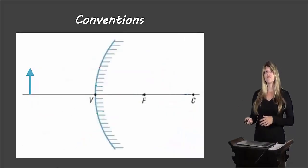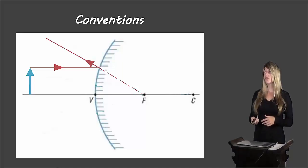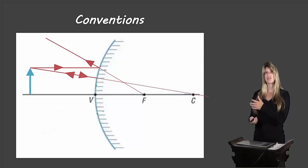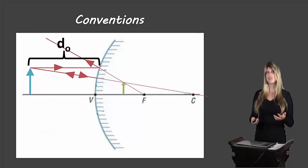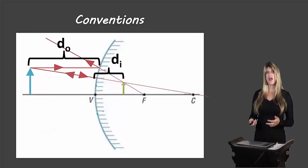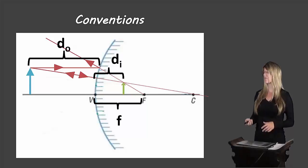Now let's see how these look in a convex mirror. A light ray parallel to the principal axis will reflect as if it came from the focus. A light ray that goes towards the center of curvature will reflect back along the same path, and where those two light rays cross is where we'll have our image. The object distance is between the object and the vertex of the mirror, DI is between the vertex and the image, and the focal length F is between the vertex and the focus.